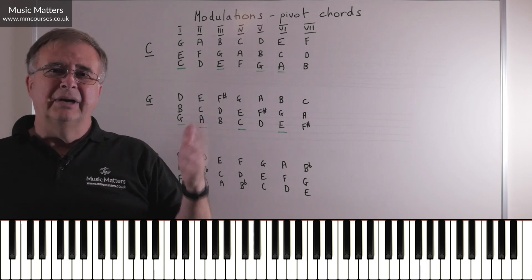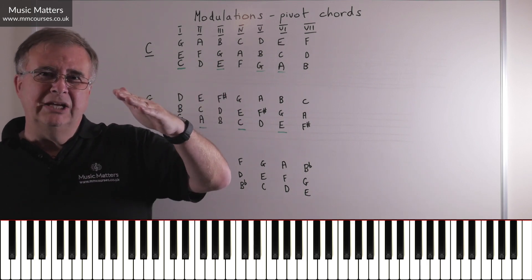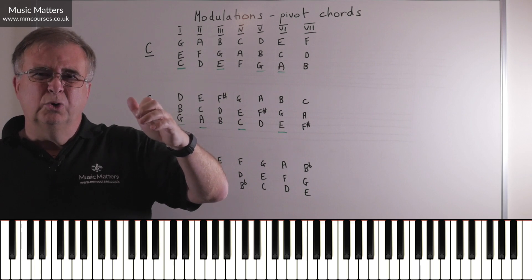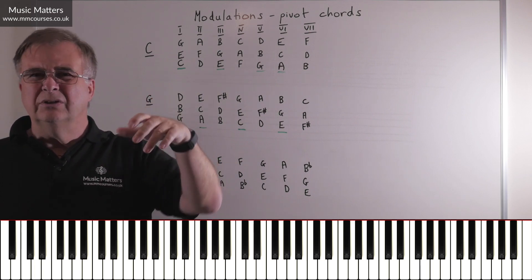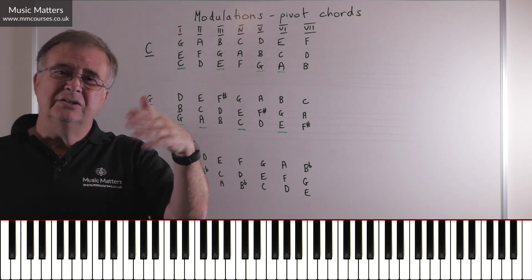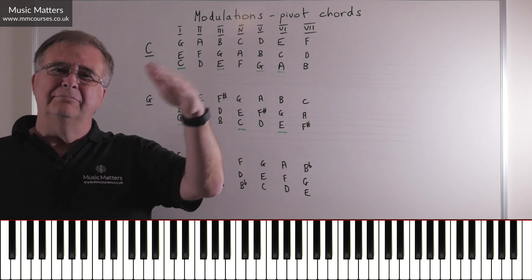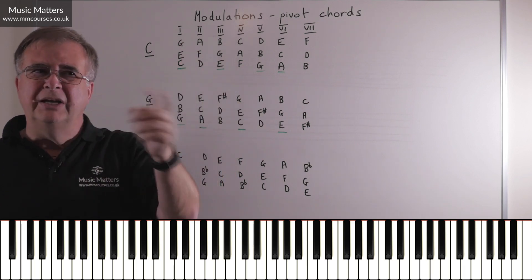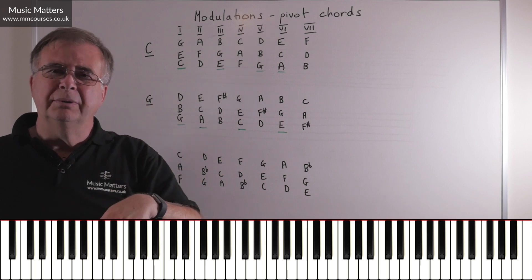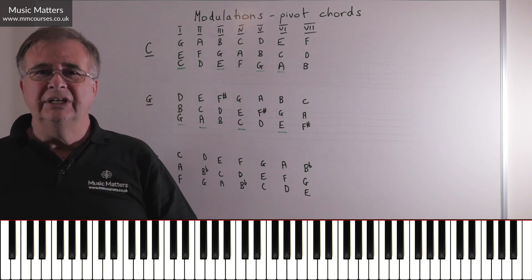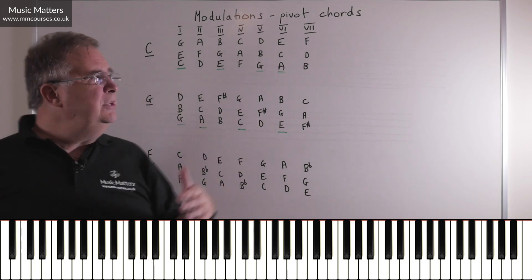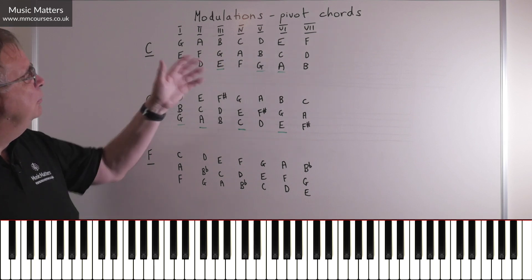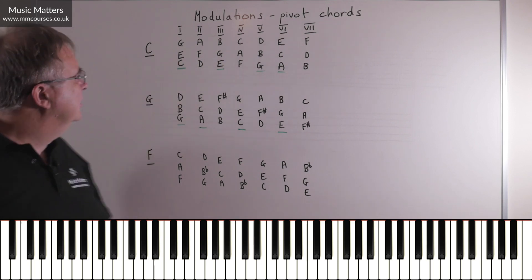So by the time you've got round to B major, well chord I in B major is also called IV in F sharp major, so that would be a pivot chord. You might be able to work your way to B major via something else that gives you a pivot chord, and you can make a journey in that direction. But when you've got closely related keys, you'll find a number of pivot chords that are quite useful.